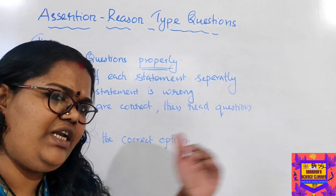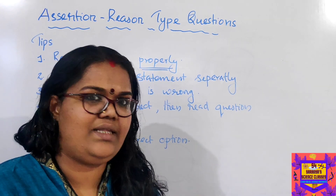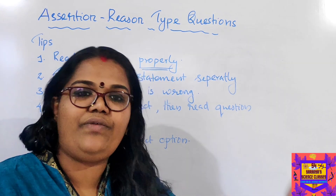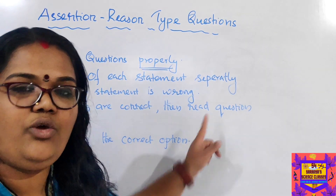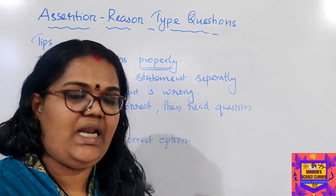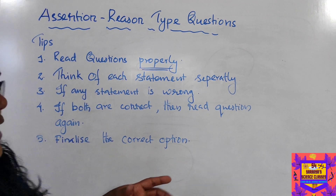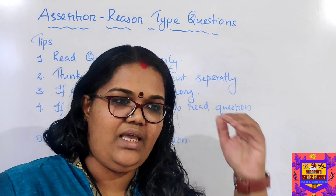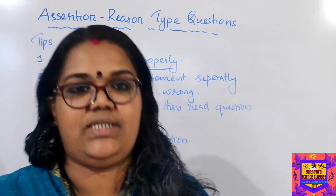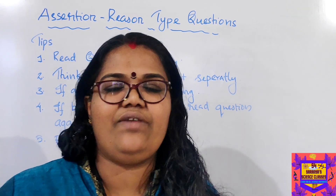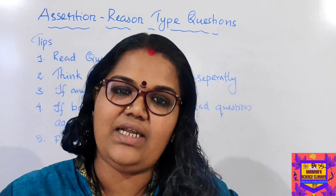If both statements are correct — neither is wrong — then you have to go further. Read both statements together again. First you read them independently; now read both together. Then check: is the reason the correct explanation for the assertion? Is the reason actually explaining the assertion statement? That is what you have to verify.